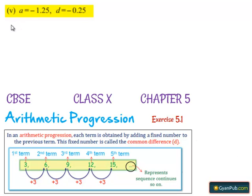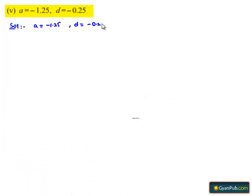Now, moving on to the fifth question. Here, the first term a is given by -1.25, and the common difference d is given by -0.25.